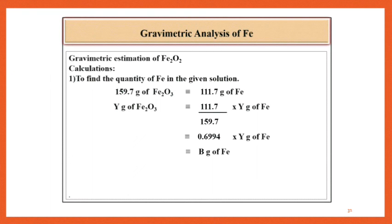Then, 159.7 gram of Fe2O3 corresponds to 111.7. So Y gram of Fe2O3 corresponds to 111.7 divided by 159.7 into Y gram of Fe equal to 0.6994 into Y gram of Fe, that is B gram of Fe.